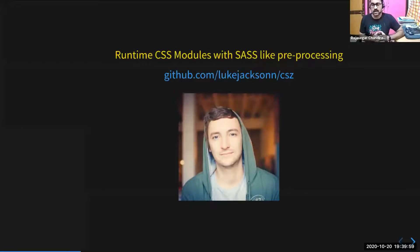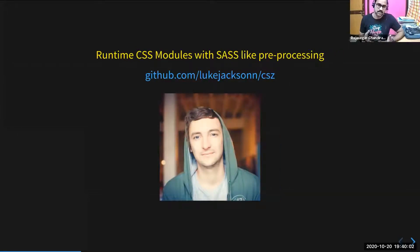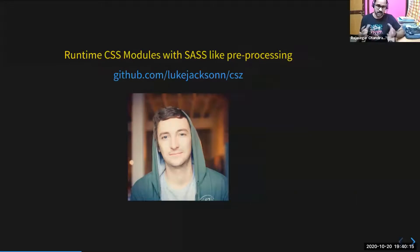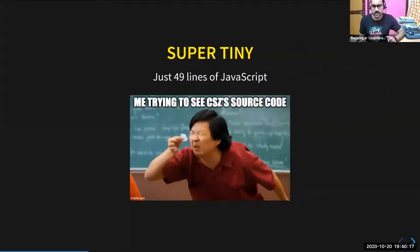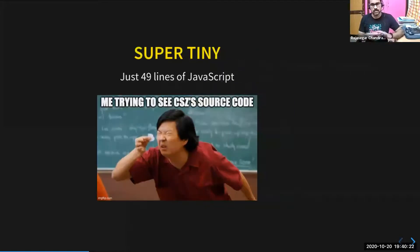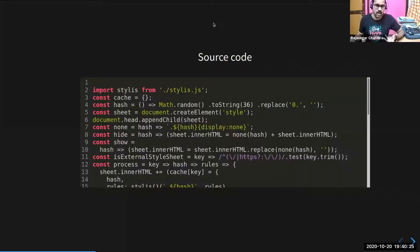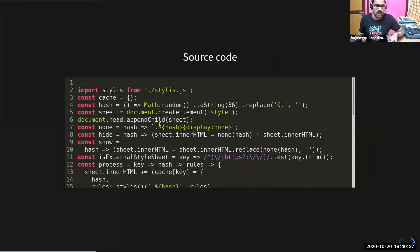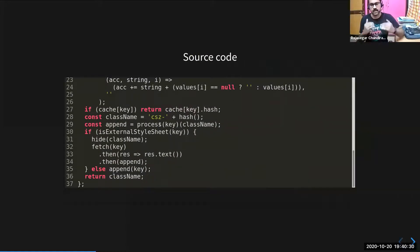So what is CSE? CSE is a runtime CSS modules with Sass-like preprocessing. It's created by Luke Jackson, a front-end developer from London, who has also created some other amazing tools like Perflink and Server. CSE is super tiny — it's just 49 physical lines of JavaScript. If you remove line breaks and comments, it comes down to around 36 or 37 lines of JavaScript, and it can fit in an entire slide. It's very, very small.